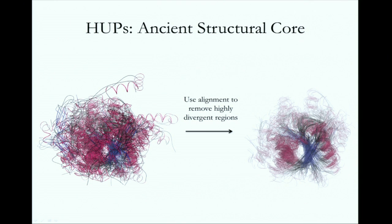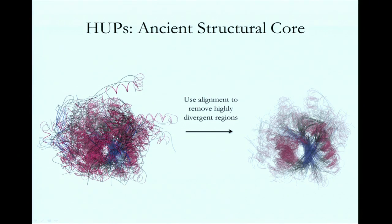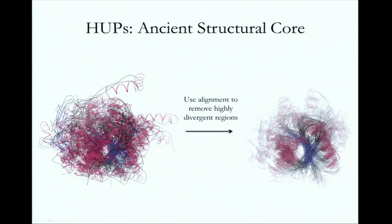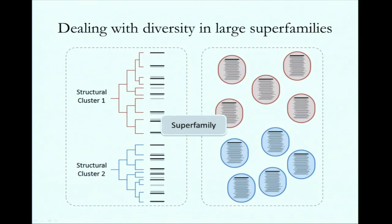This is one of the visualizations we've only very recently been looking at — how to get across the message of what a superfamily is within three or four seconds. This bit here is probably the closest we've come to a single image that says 'this is a superfamily' to people who haven't got a clue what it is. Please feel free to let us know if you have any better ideas.